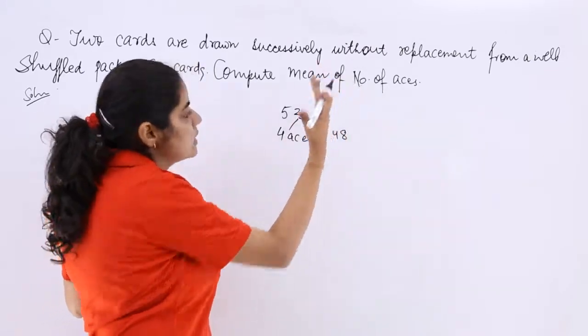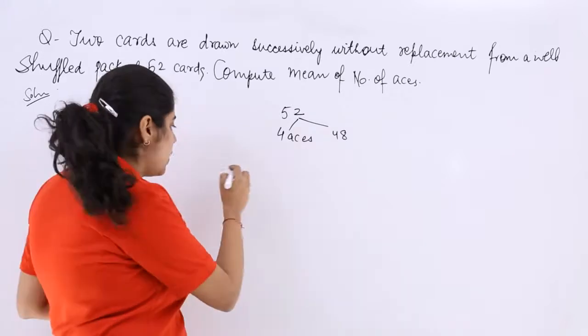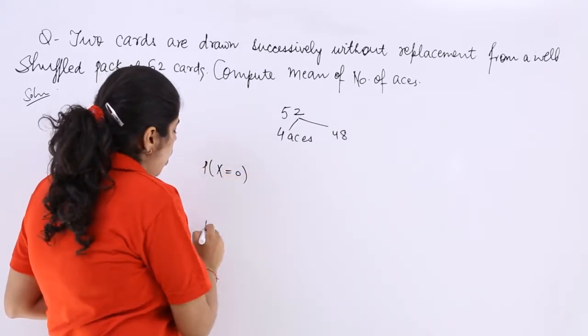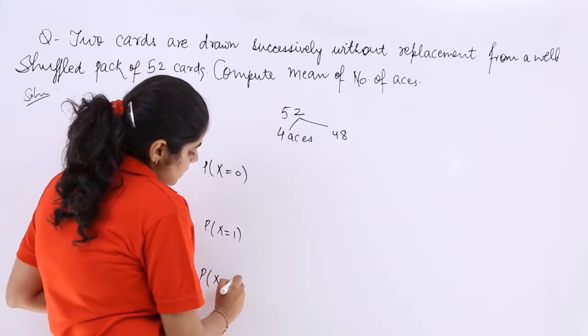When 2 cards are drawn, the number of aces can be how many? Either it can be no ace or it can be 1 ace or it can be 2 aces.